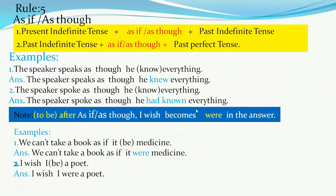Second example: 'The speaker spoke as though he had known everything' — past indefinite before 'as though,' so it takes past perfect 'had known.' Also note: 'to be' after 'as if,' 'as though,' or after 'I wish' becomes 'were.' Example: 'We can't take a book as if it were medicine.' And: 'I wish I were a poet.'